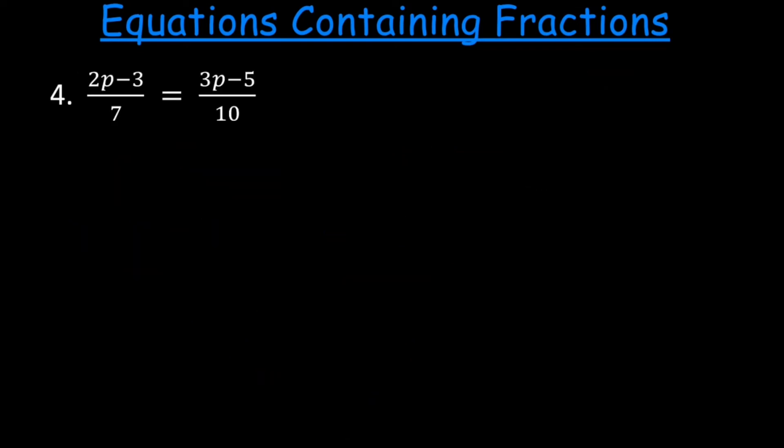The final problem for today asks us to solve for p. Following the same simple steps, the first step is to find the LCM of the denominators. The lowest common multiple of 7 and 10 is 70.